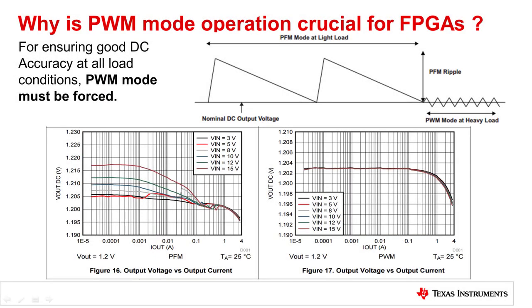To enhance efficiency at light loads, many SMPS devices support a power-save mode implemented via pulse frequency modulation (PFM). This decreases the switching frequency at light loads, achieving excellent efficiency even in standby. However, the flip side is increased ripple and DC error due to the PFM control law, which behaves similarly to hysteretic mode. This introduces a risk of not satisfying the narrow accuracy required for SOC voltages. Therefore, in most cases, the recommendation is to choose devices where PWM mode can be forced via an additional pin.